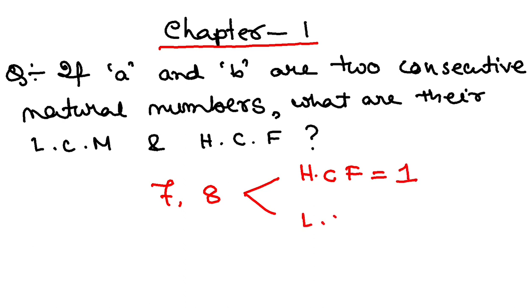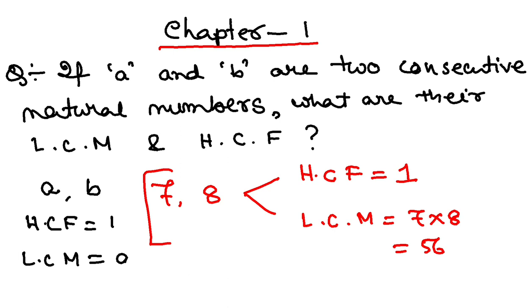What is the LCM of 7 and 8? The LCM is 56 because 7 times 8 is 56. So this is an example we have discussed. Now if the numbers are A and B, of course your HCF will be 1 and your LCM will be AB. That is question number 1.